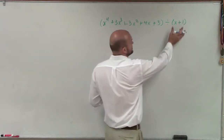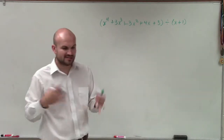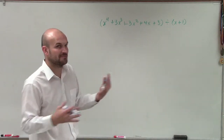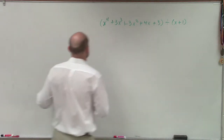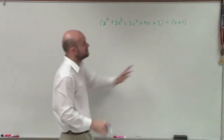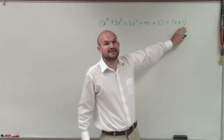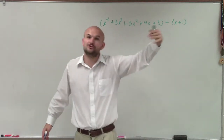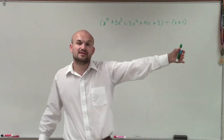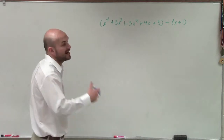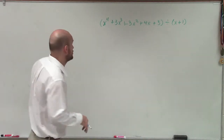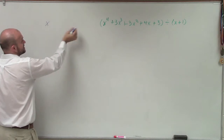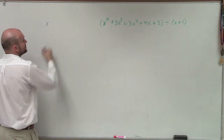What I need to first do is think about this as setting it as a factor compared to 0. But for synthetic division, I need to make sure that this is going to be a binomial with my variable to the first power. I can't use synthetic division with higher-order polynomials, so I need to make sure it's a binomial to the first power.